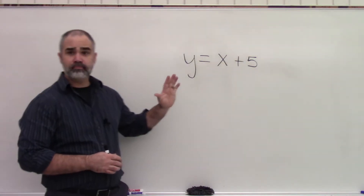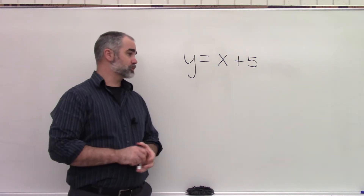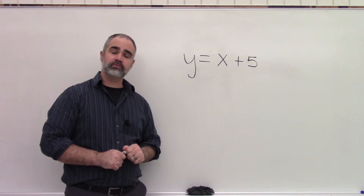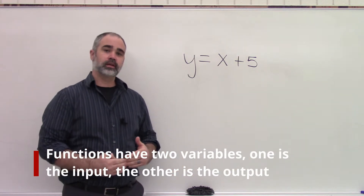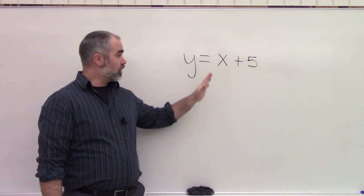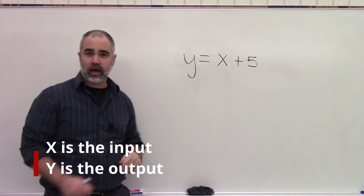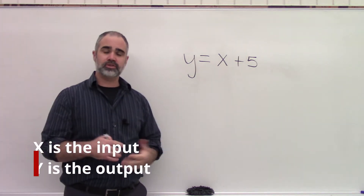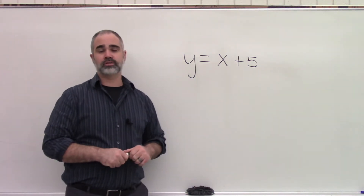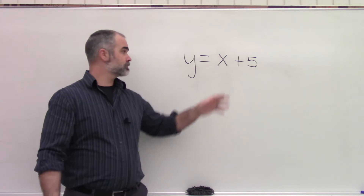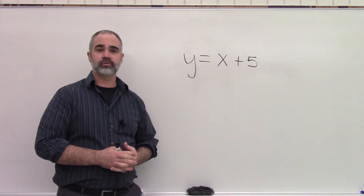So in math, functions just look like equations. They usually have two variables in them. And just like a vending machine, there's an input and an output. In functions, we almost always say that X is the input and Y is the output. Just like in a vending machine, pushing the buttons is your input, and the thing that comes out the bottom that you ordered is the output.